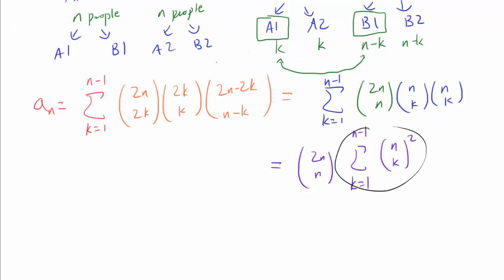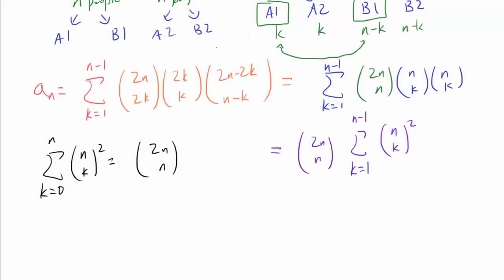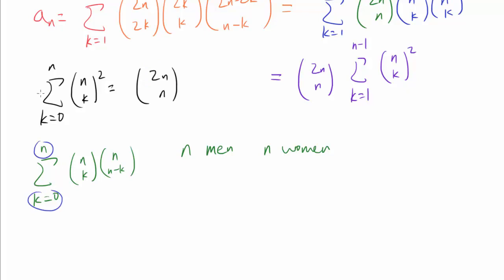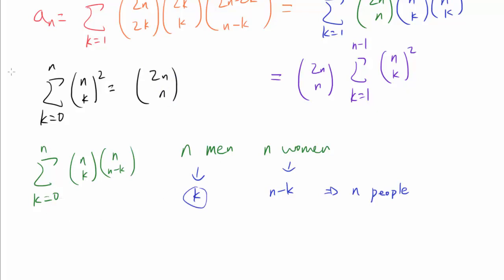This expression may remind you of the famous identity: the sum from k=0 to n of C(n, k) squared equals C(2n, n). Here is one marvelous combinatorial proof. Since C(n, k) equals C(n, n-k), we can split C(n, k) squared accordingly. Say we have n men and n women — 2n people total. As k ranges from 0 to n, we are picking k men and n-k women, which always selects exactly n people from 2n. Going through every possible k covers every way to pick n people from 2n people, so the sum must equal C(2n, n).